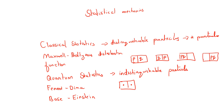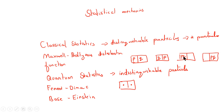In Fermi-Dirac statistics, we have fermions. Each compartment corresponds to one energy level. Due to the Pauli exclusion principle, no two electrons can have the same set of quantum numbers — meaning they cannot belong to the same compartment. So in Fermi-Dirac statistics, you cannot have both particles in the same compartment, because no two fermions can occupy the same set of quantum numbers.